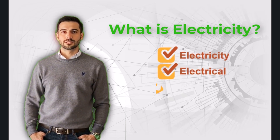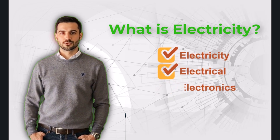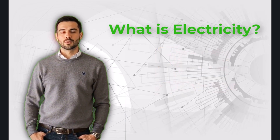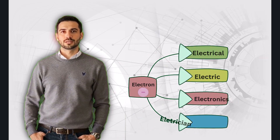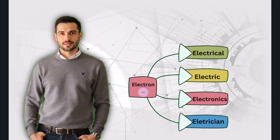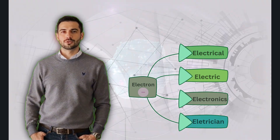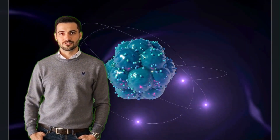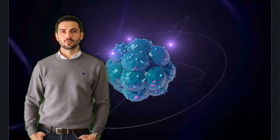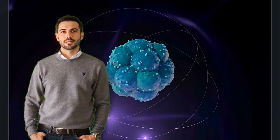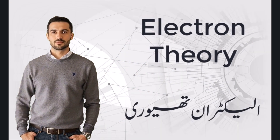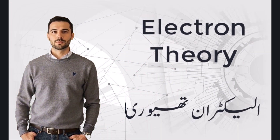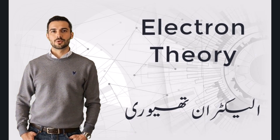What is electricity? Electricity, electrical systems, and electronics are interconnected terms, all originating from the word 'electric,' which itself derives from 'electron.' To truly understand electrical and electronic systems, one must first understand what an electron is and how it behaves. Electrons are fundamental to the movement of charge and energy. To comprehend electricity, we must delve into the theory of electrons.